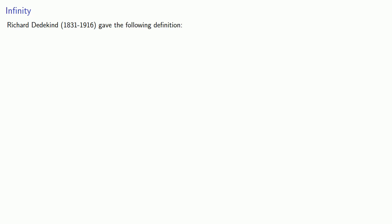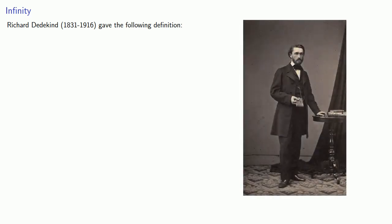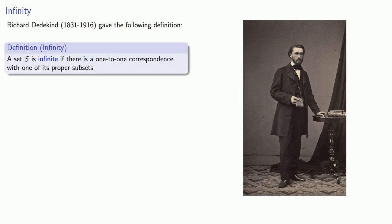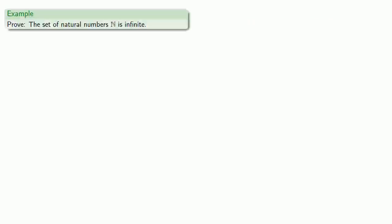But let's see if we can make some sense out of infinity. And so, Richard Dedekind gave the following definition: A set is infinite if there is a one-to-one correspondence with one of its proper subsets. So, for example, let's prove the set of natural numbers is infinite.